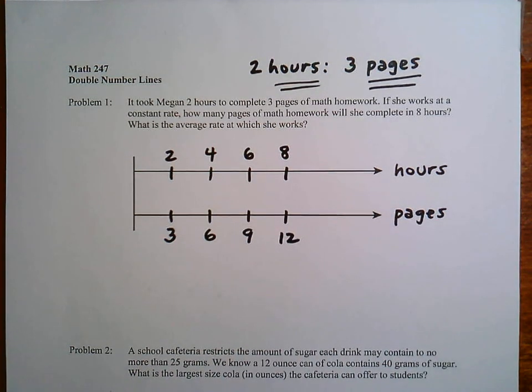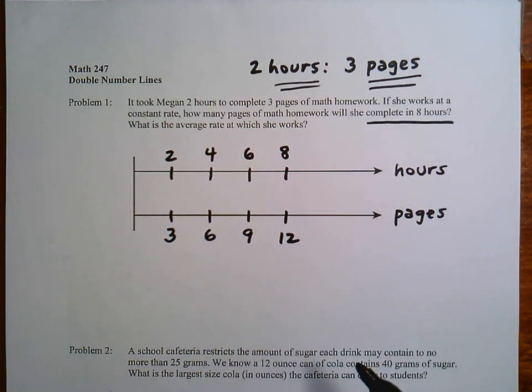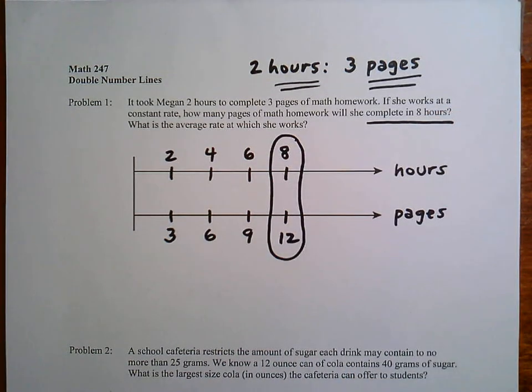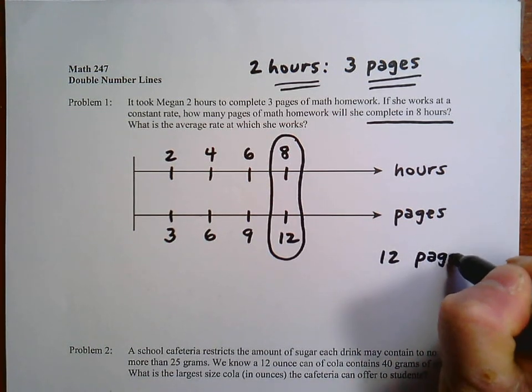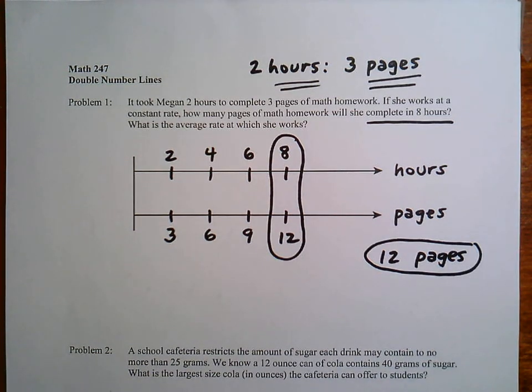So that answers the question. How many pages can she finish in 8 hours? So I usually circle this here so you can actually see the answer. So we have 12 pages. That's a nice way to see all the number relationships in the problem.